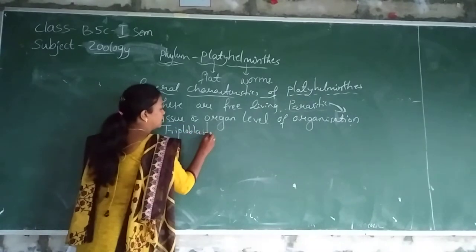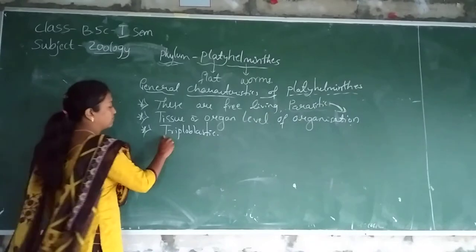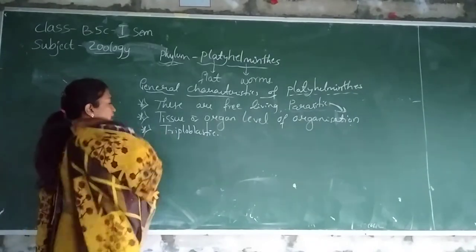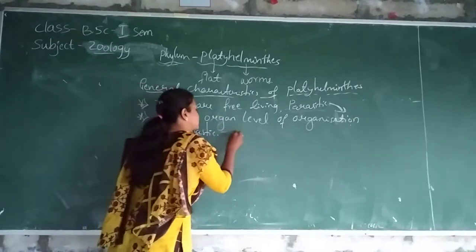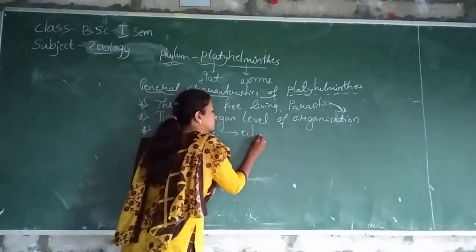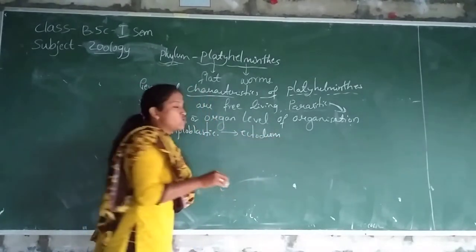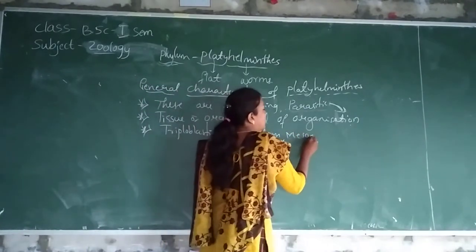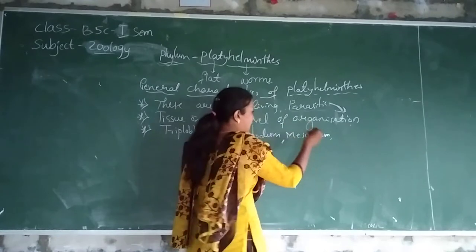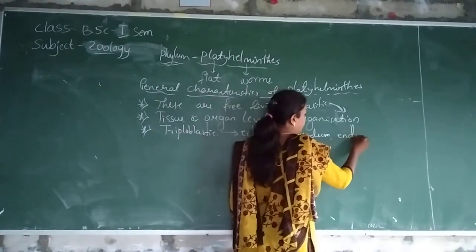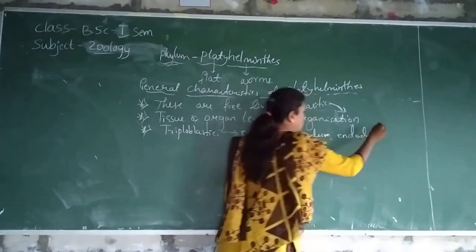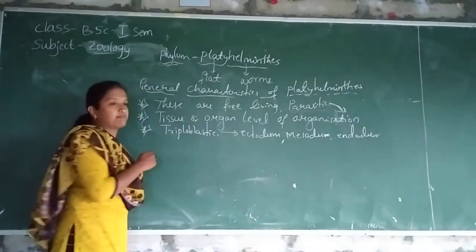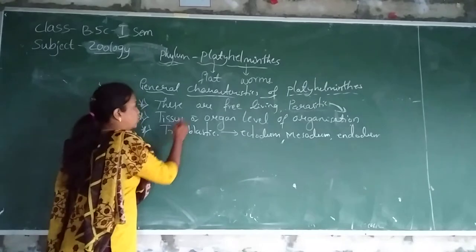They are triploblastic — 'triplo' means three layers are present in these animals. One is ectoderm, which is the outermost layer. Then mesoderm is the middle layer. Then the last one is endoderm. Ecto-, endo-, and mesoderm are the three layers present in these animals. That is why the name is called triploblastic.